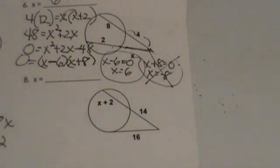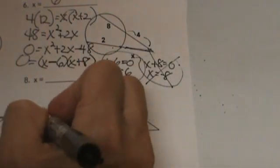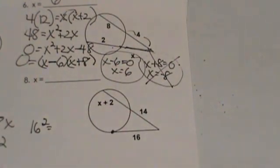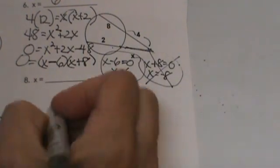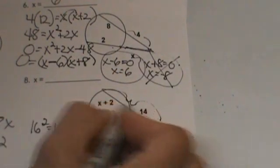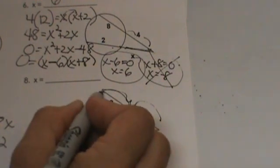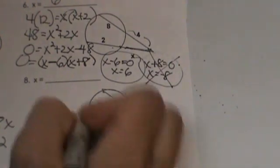Because we have that x plus 2. Don't let it scare you though. Let's set them up and follow the rules. We have our tangent again, so we are going to take that tangent and square it. We are going to set it equal to the exterior which is 14 times the whole part. Well x plus 2 is just the inside.